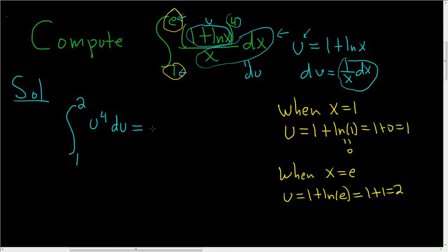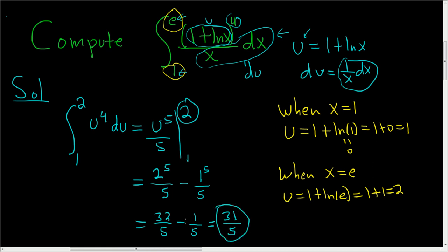To integrate this, we'll just use the power rule. So this is u to the fifth over 5, and we're going from 1 to 2. First we plug in the 2, so we get 2 to the fifth over 5. We subtract and we plug in the 1, so 1 to the fifth over 5. 2 to the fifth is 32, so 32 over 5. 1 to the fifth is 1, so 1 over 5. And 32 minus 1 is 31. And that is the final answer.